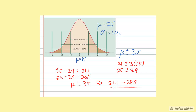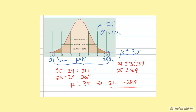Since this is within three standard deviations of the mean, we can say that 99.7% of the batteries will last between 21.1 hours and 28.9 hours. Mean plus or minus three standard deviations captures almost all of our data.